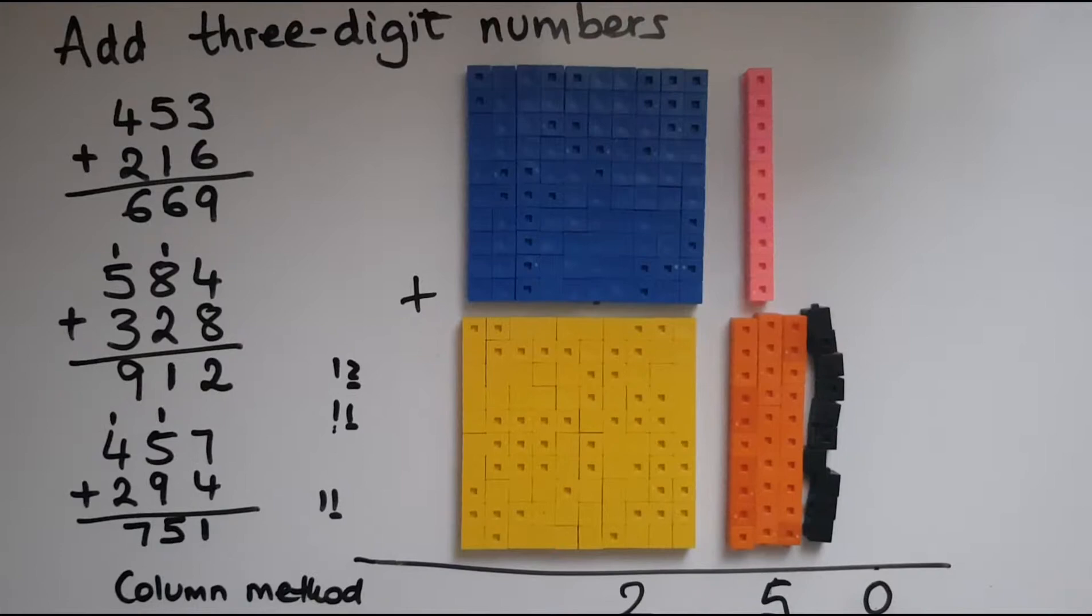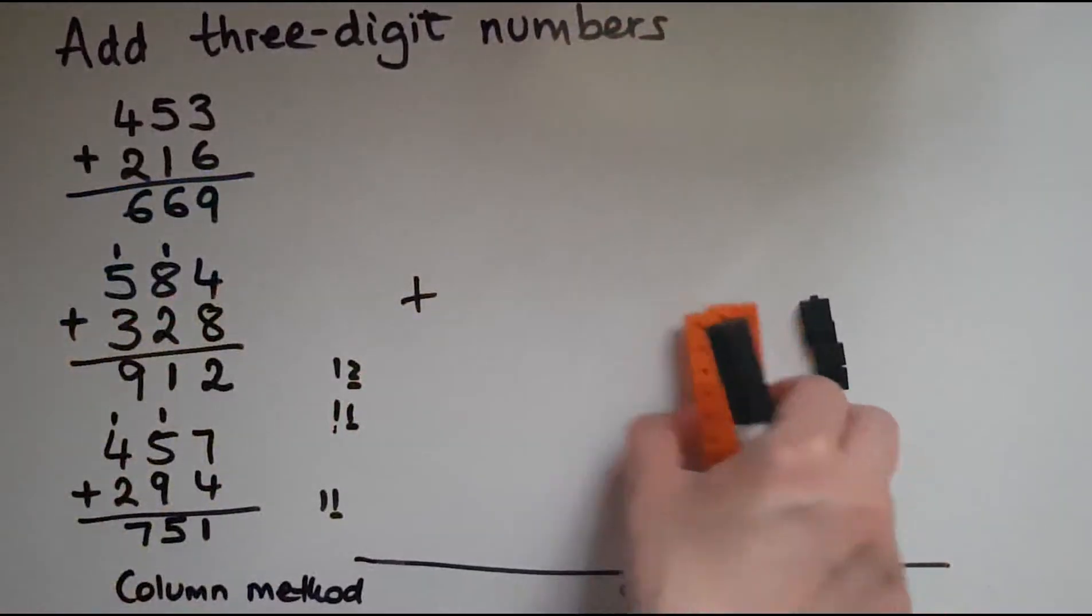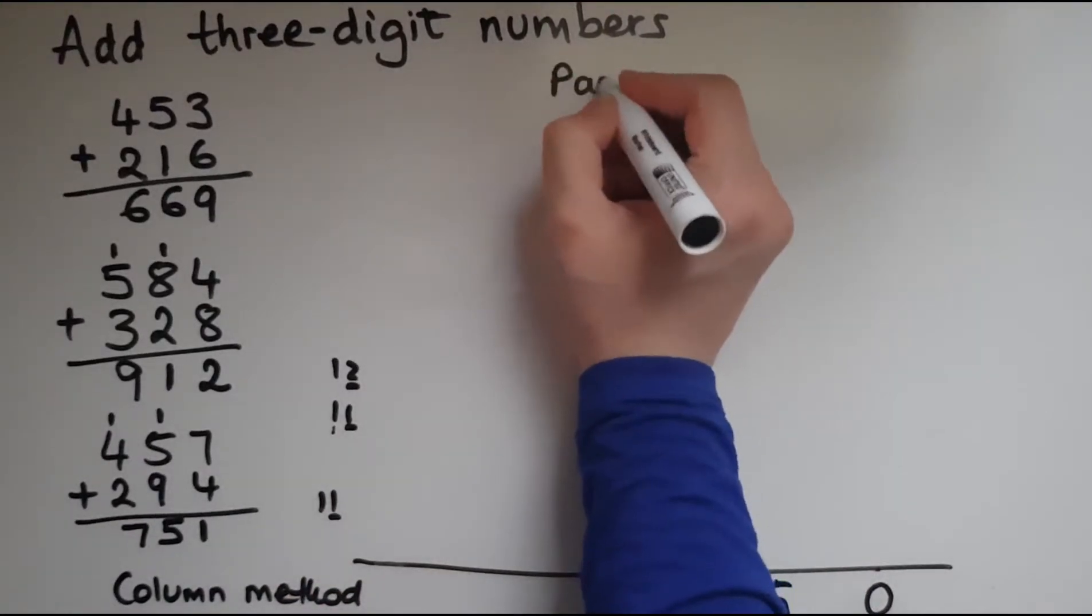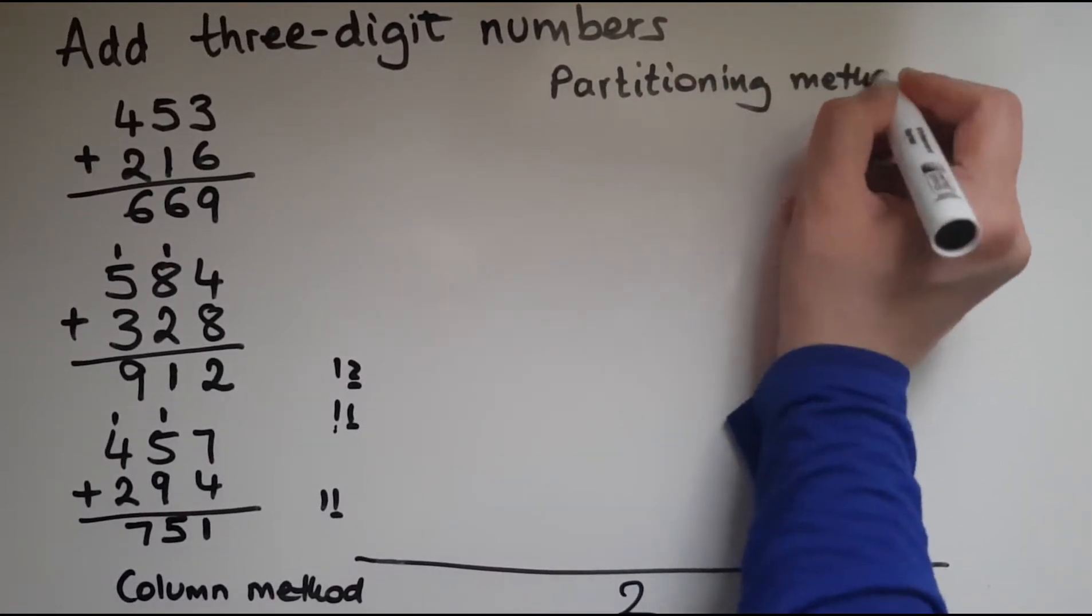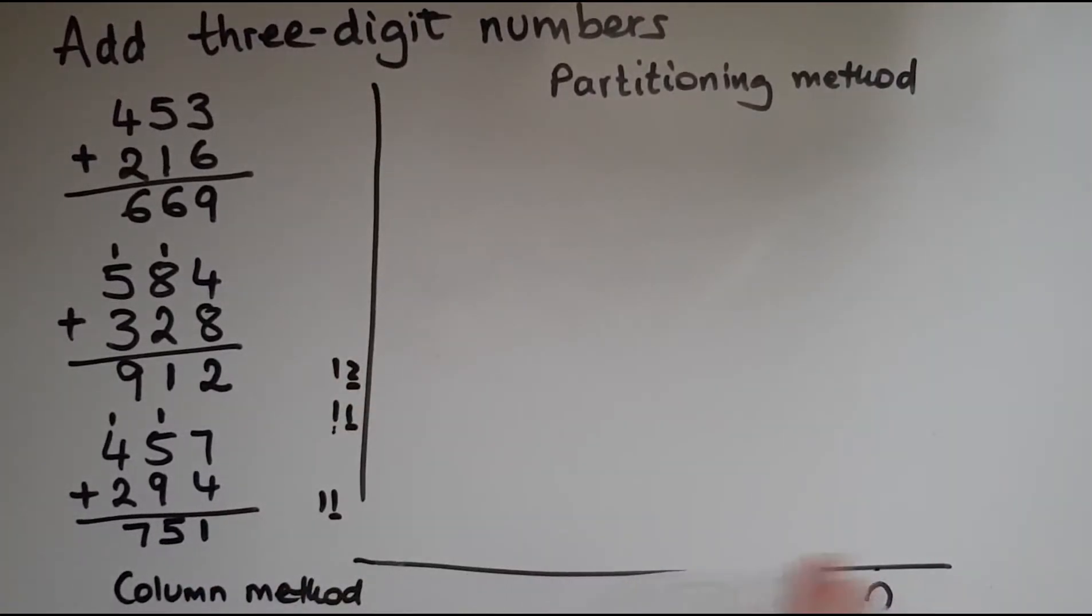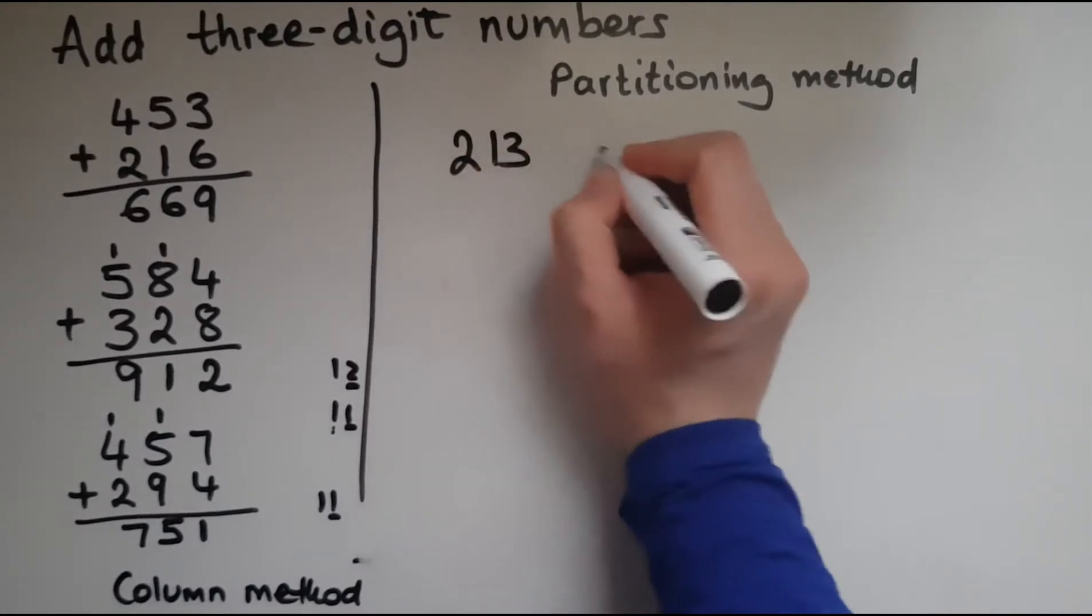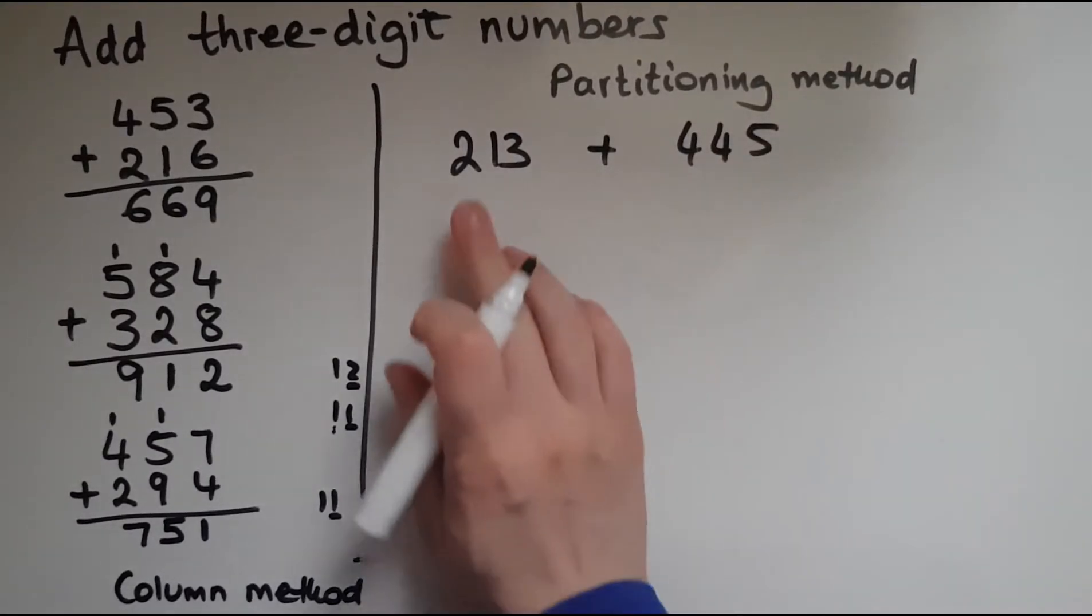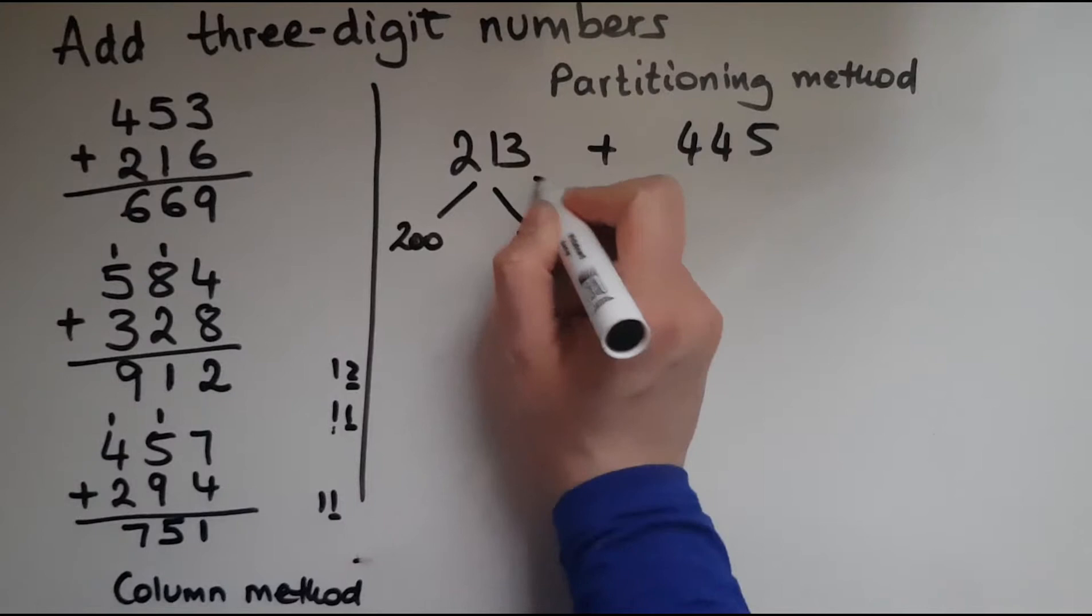So now that we've looked at the column method, we'll look at a couple of other methods. The next one will be the partitioning method. So we'll break the numbers down into parts. Let's say we've got 213 and we'll add to it 445. 213 will break it down into 200, 10 and 3.